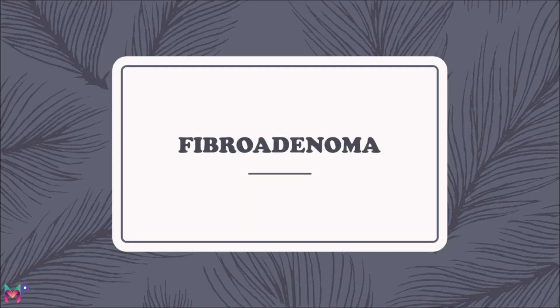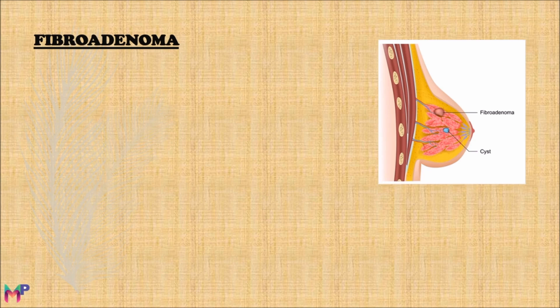Fibroadenoma is the most important topic for the board examination. Before moving towards the gross morphology and histological features, let us discuss the basics. Fibroadenoma, as the name indicates, is derived from two words: fibro, because there is fibroblastic stroma in this tumor, and adenoma, because there are epithelium-lined glandular structures seen in it.